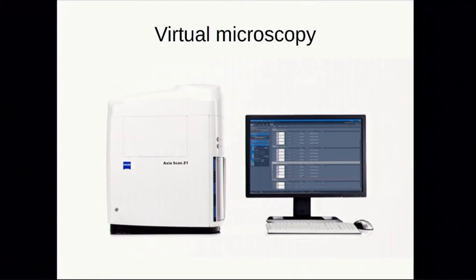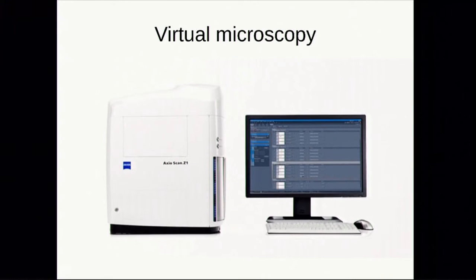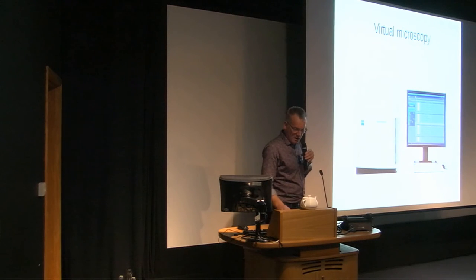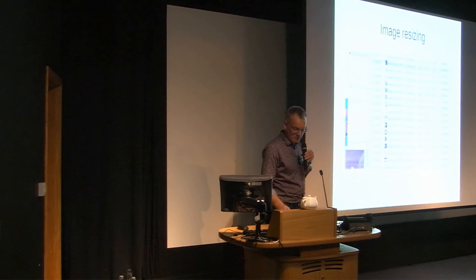Virtual microscopy has become very popular in the university sector. Instead of handing around a microscope slide that can get broken, you put the slide into a scanner once and everyone can view it on their desktop. These images are enormous — typically 200,000 by 200,000 pixels. VIPS is popular in this field and is used for most of the large slide pathology libraries.